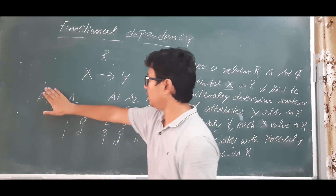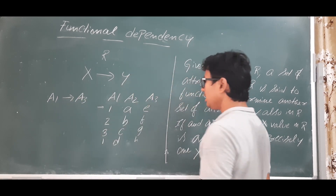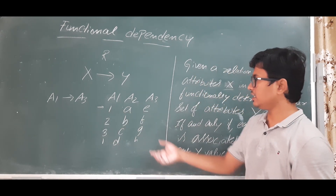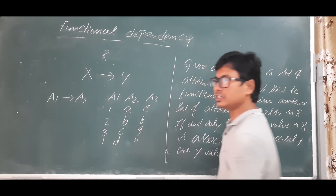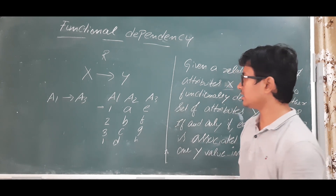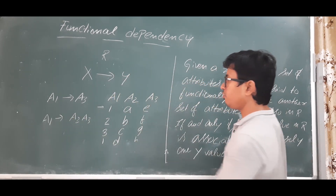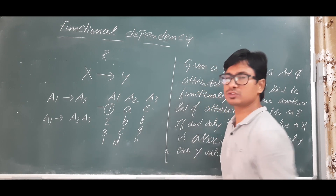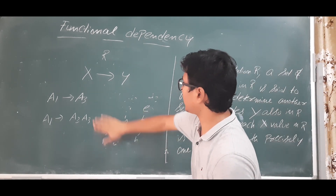Now let's check whether A1 can functionally determine A3. For A1 = 1, A3 is 'e', but for the same value 1, A3 is also 'h'. So A1 does not functionally determine A3. For A1 = 2 it gives 'f', for 3 it gives 'g', but since 1 gives both 'e' and 'h', A1 does not functionally determine A3. Similarly, A1 does not functionally determine (A2 and A3) together.